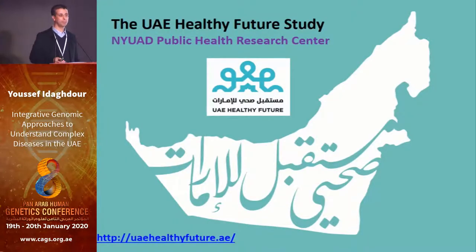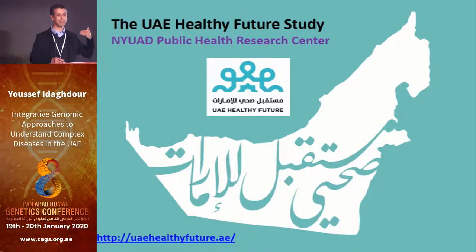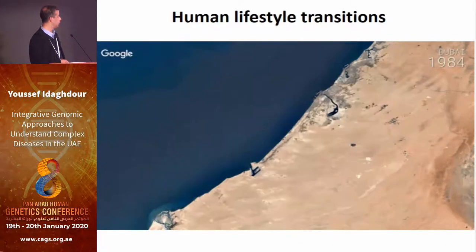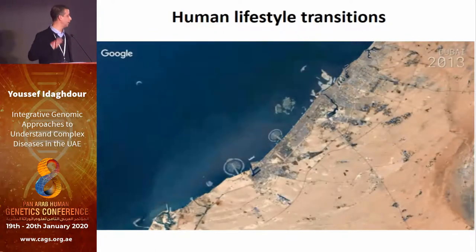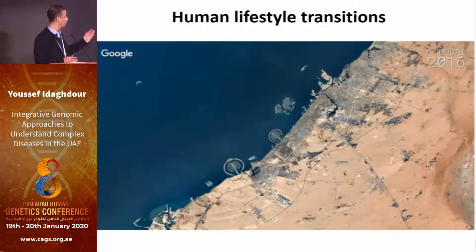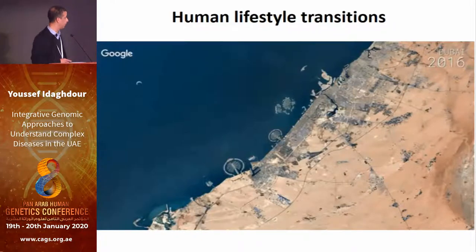We decided to set up a study here based in Abu Dhabi called the UAE Healthy Future Study. This study specifically looks at sampling a random sample of the population in large numbers and following them over time, collecting as much information as possible. This is showing the massive transition — there is nothing better than Dubai to show what happened in the last 30 years. Within one generation, there was a massive change in lifestyle: people used to live nomadic lifestyles, then switched to a very urbanized lifestyle.